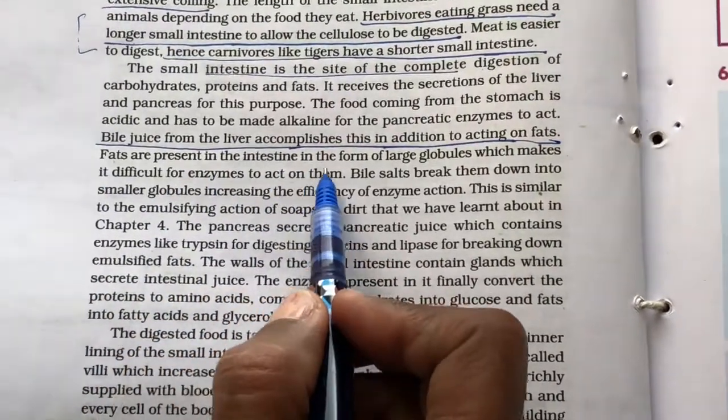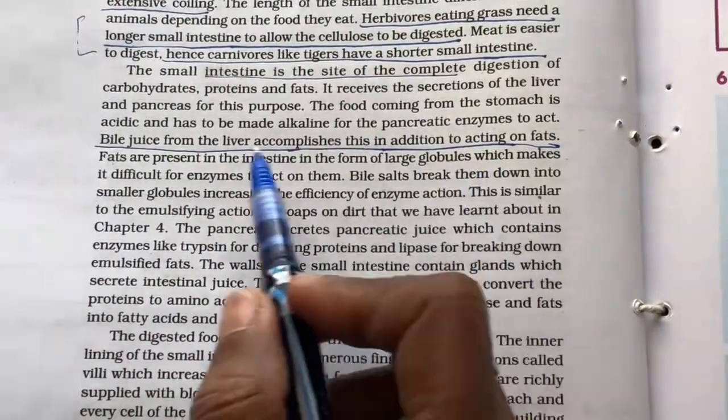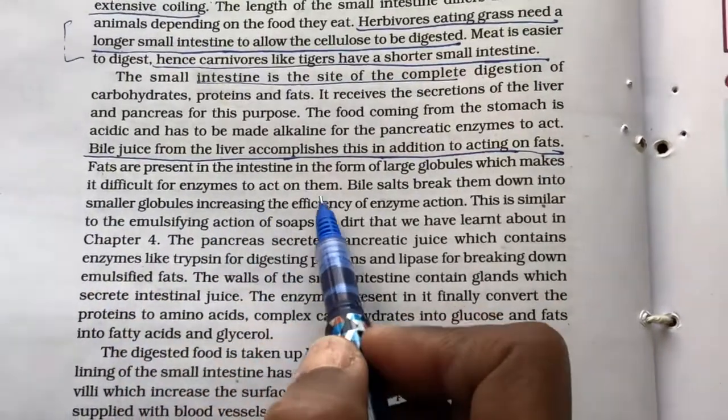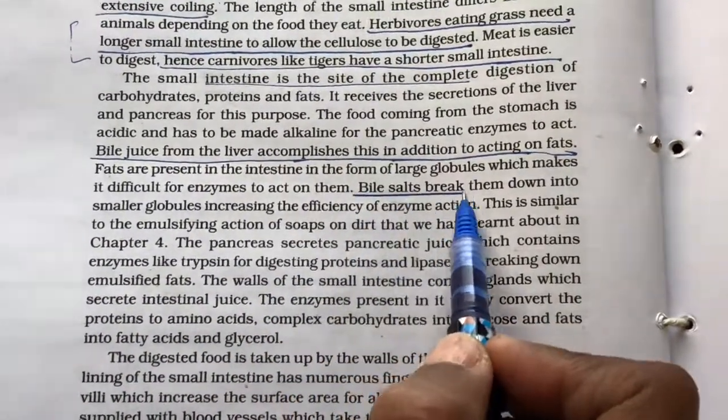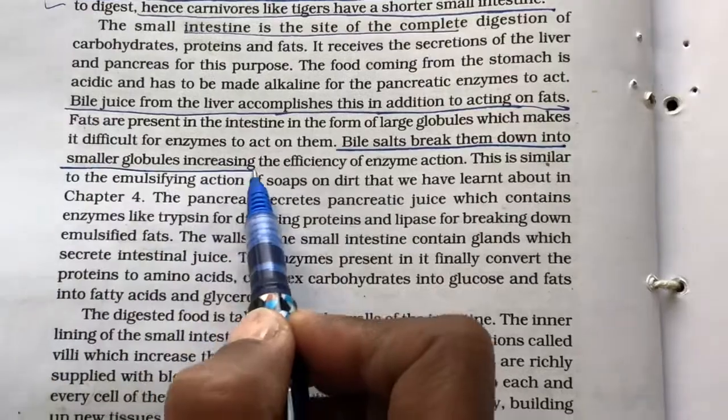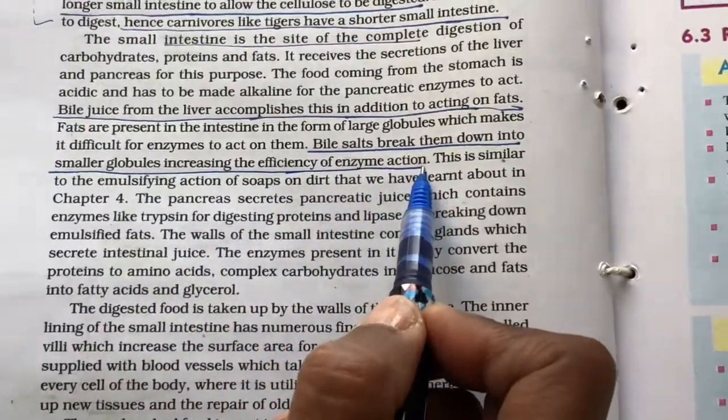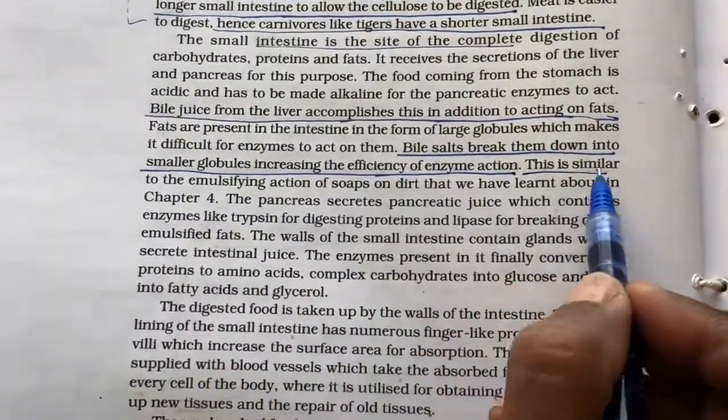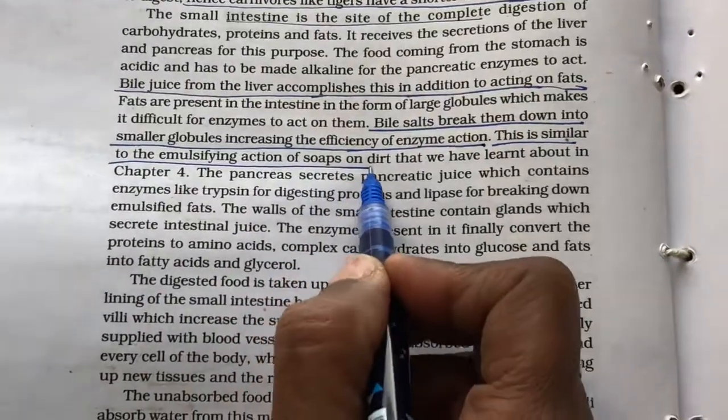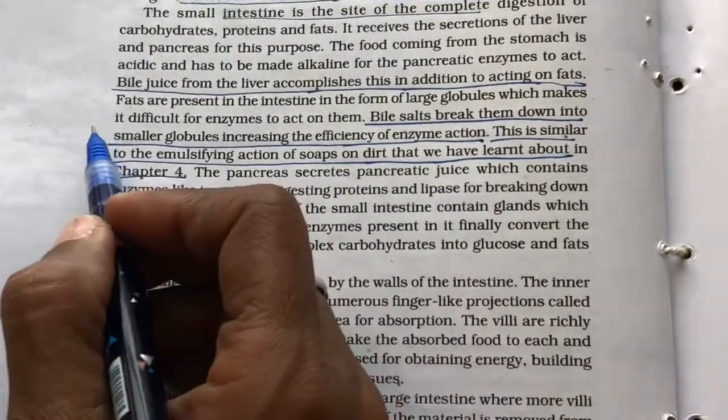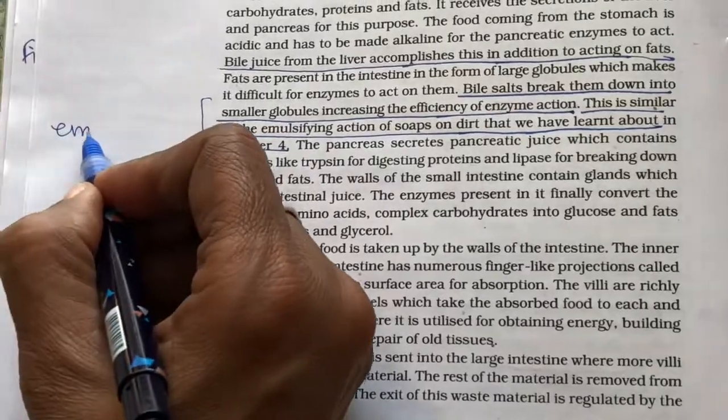Fats are present in the intestine in the form of large globules which make it difficult for enzymes to act upon them. Bile salts break them into smaller globules increasing the efficiency of enzyme action. This is similar to the emulsifying action of soap on dirt that we have learnt in chapter four. This is called emulsification.